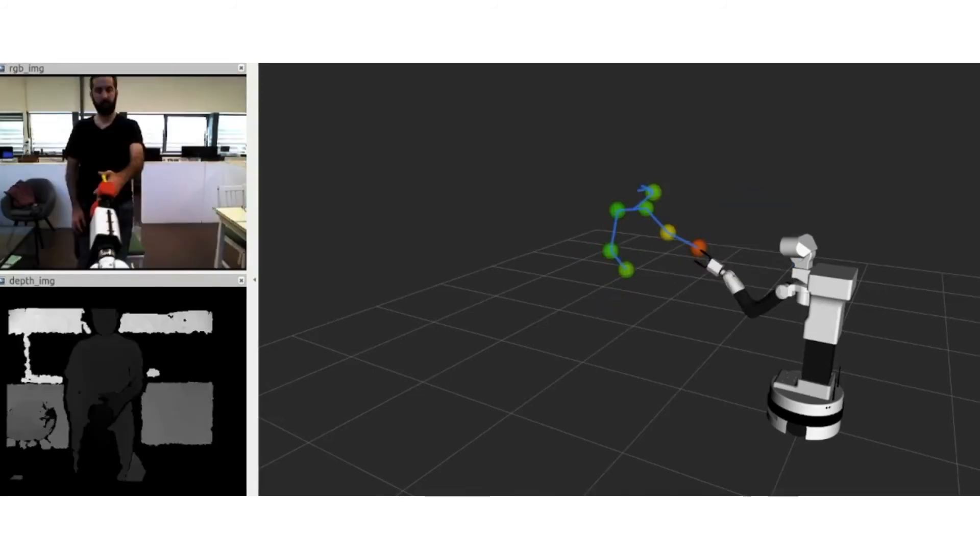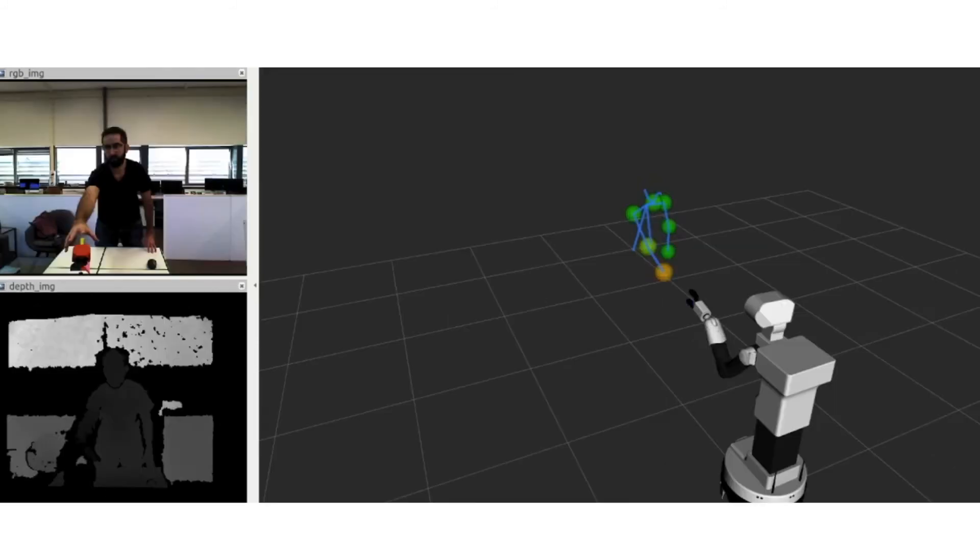However, we observed that the system works with partial occlusions. Finally, the perception system also works when part of the human's body is completely occluded by a table.